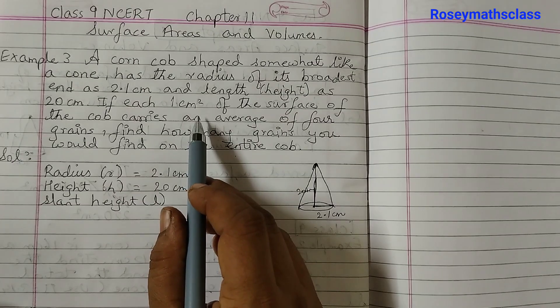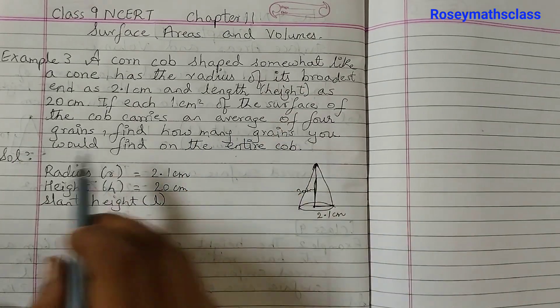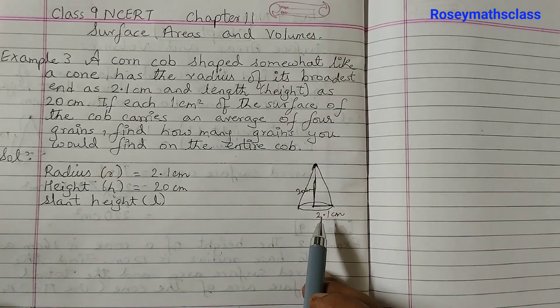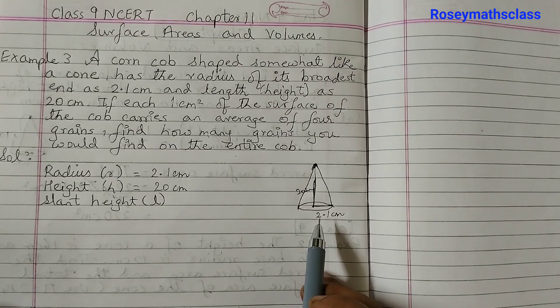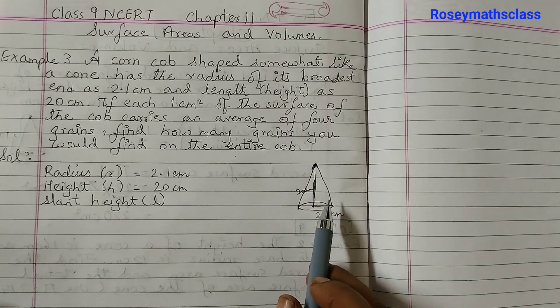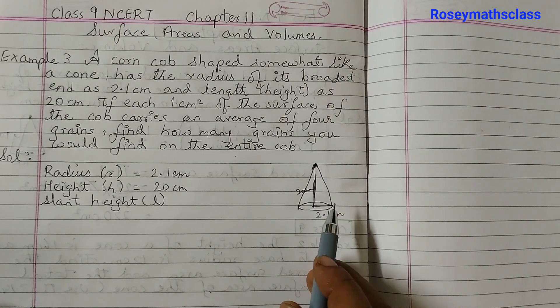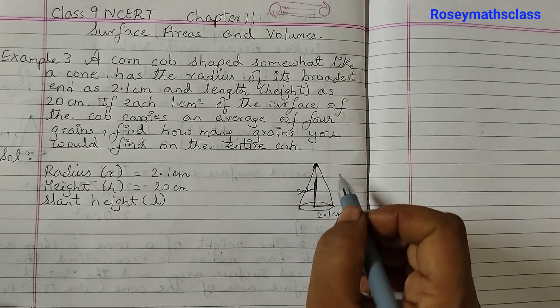It's given that 1 cm² of the surface has 4 grains. So in this case, first we need to find the curved surface area of this cone. And then we need to find the number of grains. So for that we need the slant height.